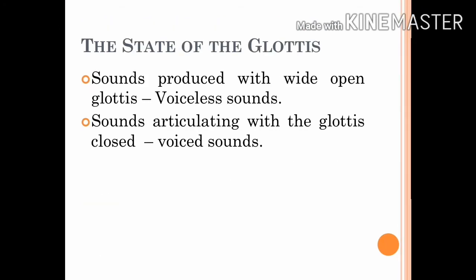The state of the glottis refers to the different positions the vocal cords take when we speak. Speech sounds are divided into two kinds — voiceless and voiced — according to two different states of the glottis. The sounds produced with the glottis open are called voiceless sounds, and those produced with the glottis closed are voiced sounds.